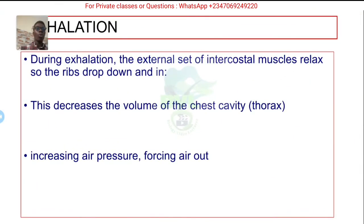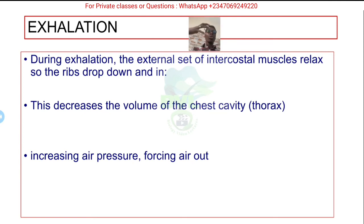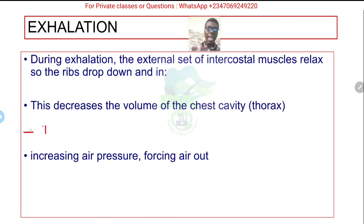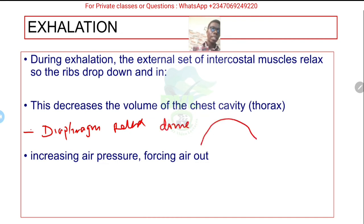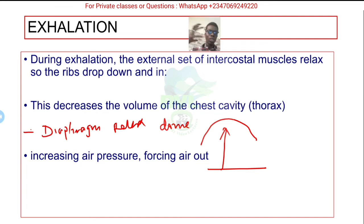On the other hand, when you exhale, the external intercostal muscles relax so the ribs go inward and downwards. This decreases the volume of the chest — everything is squeezed — which increases the pressure, forcing air out. Additionally, the diaphragm relaxes and forms a dome shape, pushing the air out of the lungs.